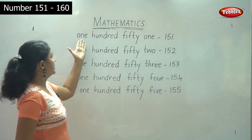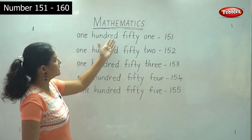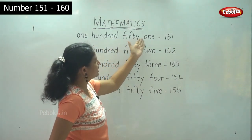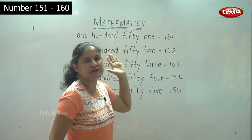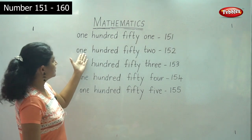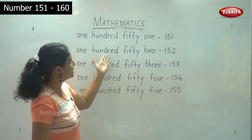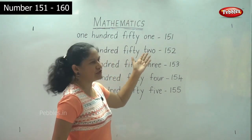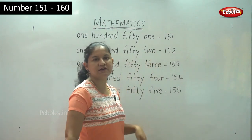O-N-E H-U-N-D-R-E-D F-I-F-T-Y O-N-E — 151. O-N-E H-U-N-D-R-E-D F-I-F-T-Y T-W-O — 152.